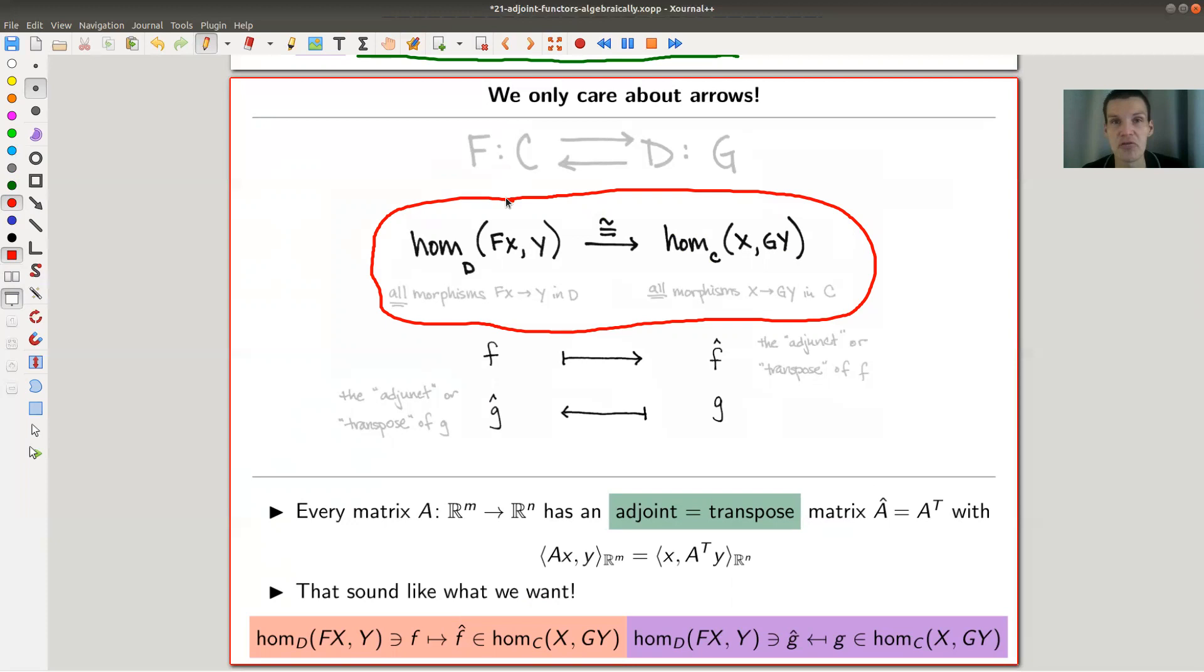Think of this like a Fourier transform. You're F, and you have an F hat, and you have an inverse operation, G, and you have a G hat. But only on arrows, and you don't care about objects. You don't even care about objects.